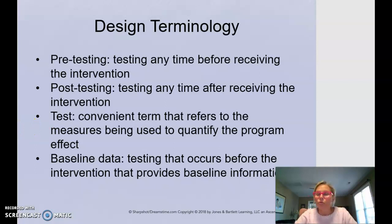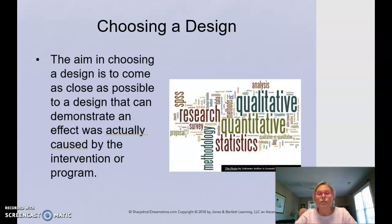So now let's move into how do you choose a particular design when you're doing your research. So I think they make a really good point. The whole aim in choosing your design is to come as close as possible to a design that can demonstrate an effect was actually caused by the intervention or the program. We want to know that because the kids did the after-school program, that's why they had the change that occurred.